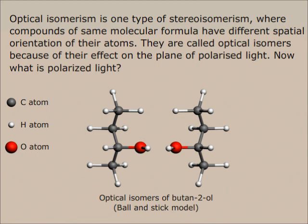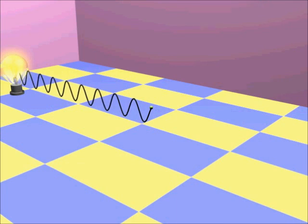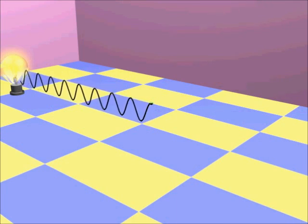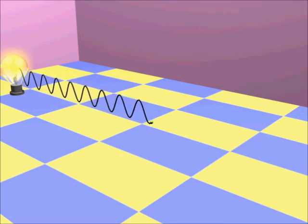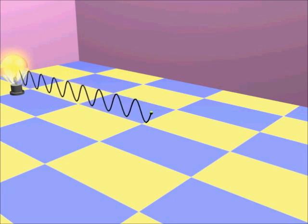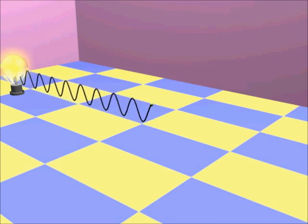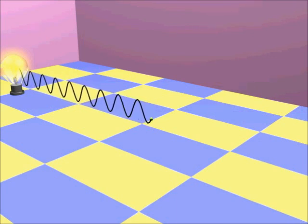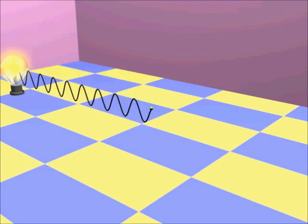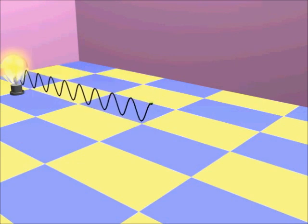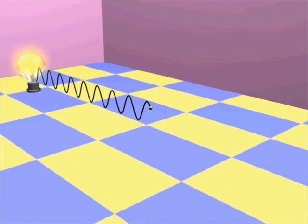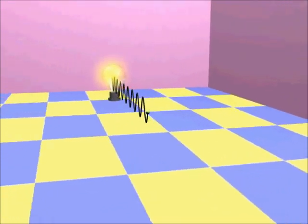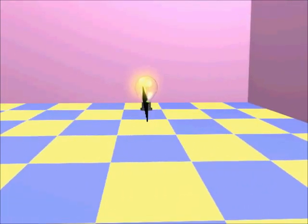Now what is polarized light? Light is nothing but an electromagnetic wave. The light wave may be thought of as an oscillating transverse wave perpendicular to the direction of wave propagation. The vibration is occurring in a plane. Now if we look at the light directly from the source, the vibration seems to go up and down like this. So this two-headed arrow can represent the wave.